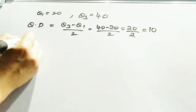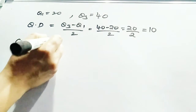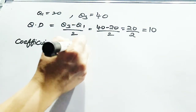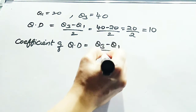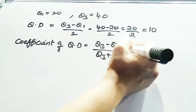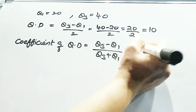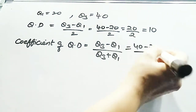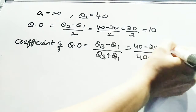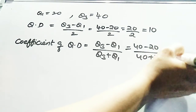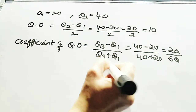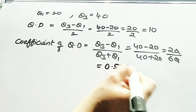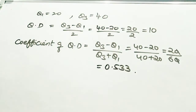If you want to find the coefficient of quartile deviation, the formula is (Q3 − Q1) / (Q3 + Q1). Substituting: (40 − 20) / (40 + 20) = 20 / 60 = 0.333. This is the method for solving quartile deviation in discrete series.